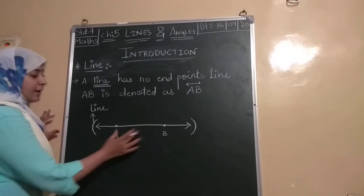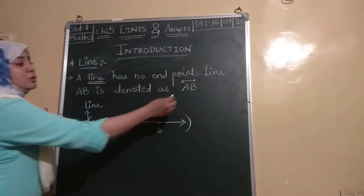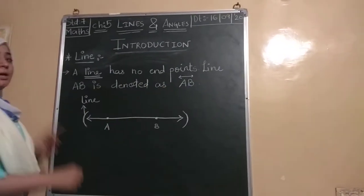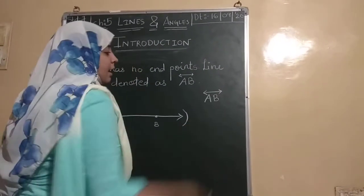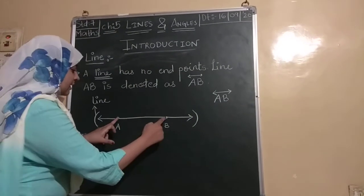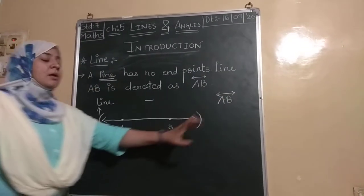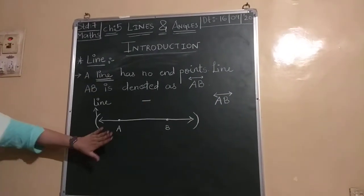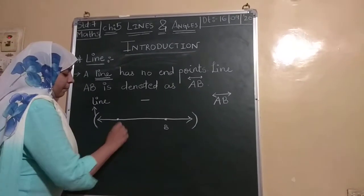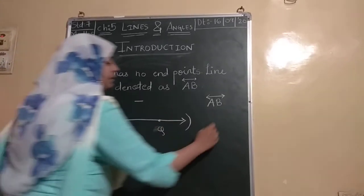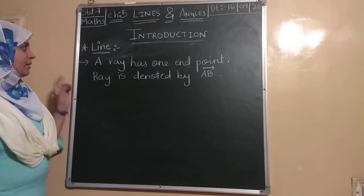So if I have given a line the name A, B, then how will I denote it? Line AB. And above it will come the line symbol. In line segment we saw only a bar. This is line segment, this is line. So now you understand what is line and what is line segment. If I give the name PQ, then how will you denote line PQ? Line PQ, got it?